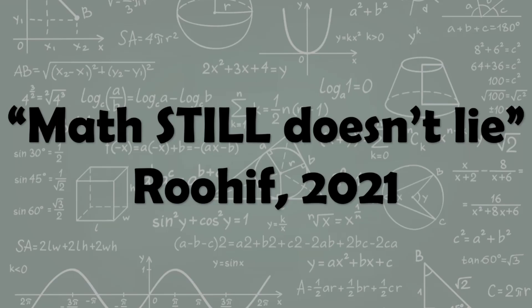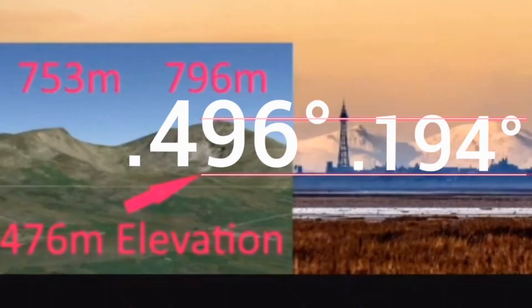Welcome back to round two with Brian Leakey. Here's the still shot from the second half of Brian Leakey's video. What he's doing here is comparing the angular size for part of the mountain on the right-hand side, which is called the Old Men of Coniston, calculating an angular size for that part between the pink lines to be 0.194 degrees, and then translating that across to Blackpool Tower in the foreground. He says now we know that Blackpool Tower from that distance has an angular size of 0.496 degrees. Do you start to see the problem here?